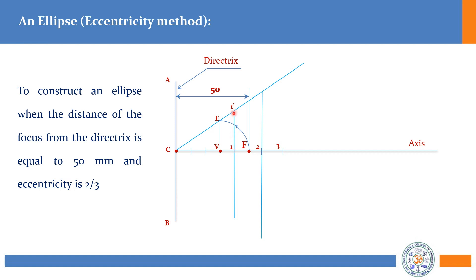This 1 to 1-dash distance is your measurement. With compass or divider, measure this distance. Then with F as center, draw an arc on the same line — that is the procedure to get P1. For the second line through point 2, measure the 2 to 2-dash distance, then with F as center mark on that line. I have marked on the other side also to get P1-dash and P2 on the other side.